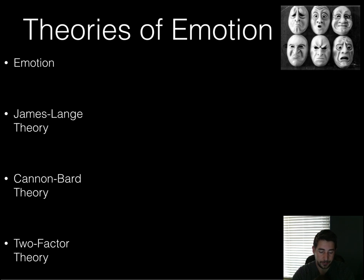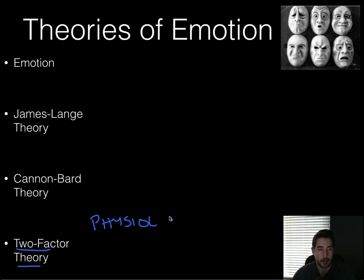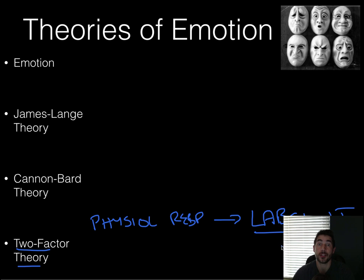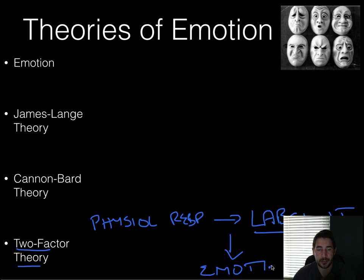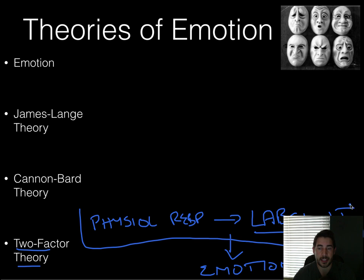Now the two-factor theory, which is a later theory that came out in the 1960s, says that you have an arousal — a physiological response — and you have to consciously label it. That's the key here: you label it. So that heart beating is you being in love, or that heart beating is you being fearful. You label it, and then you have your emotion after you've labeled it. The physiological response and the labeling occur, and then lastly you have your emotion.